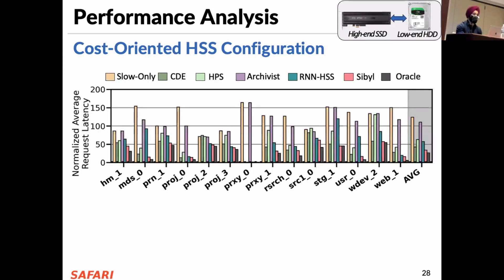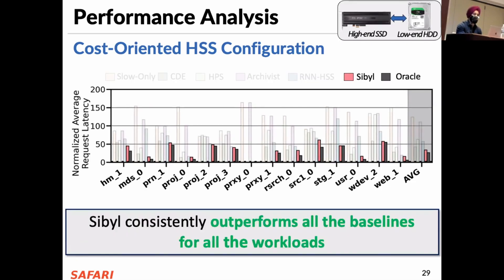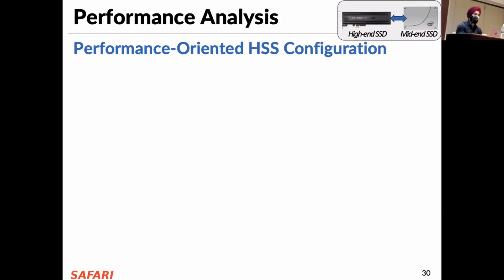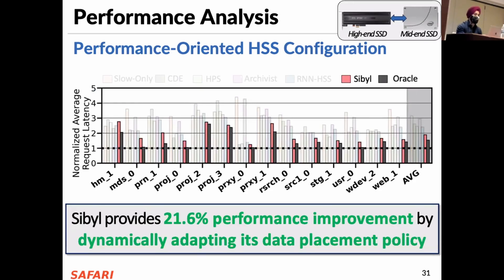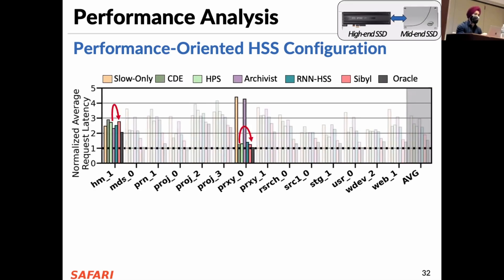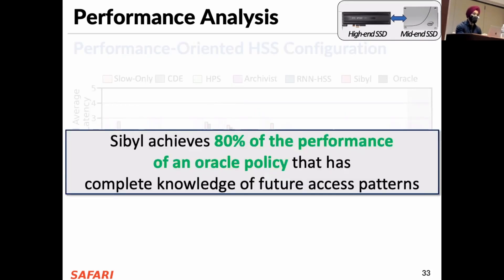We show performance results in terms of average request latency for all MSR Cambridge workloads for all policies including the Oracle. Sybil consistently outperforms all baselines for all workloads. In the performance-oriented hybrid storage configuration where the two devices have similar latency, Sybil provides 21.6% performance improvement by dynamically adapting its data placement policy. However, Sybil provides slightly lower performance than other baselines for two workloads — these are write-intensive workloads with many random requests in terms of both access pattern and request size. For such workloads, we show in the paper that frequent retraining and weight transfer are needed. On average, Sybil achieves 80% of the performance of an Oracle policy that has complete knowledge of future access patterns.